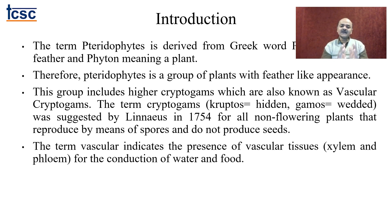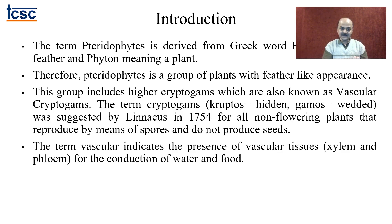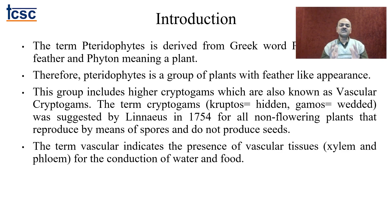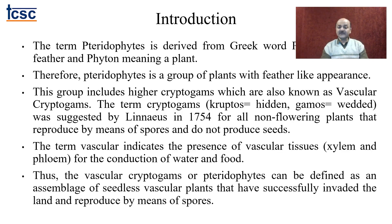The term vascular indicates the presence of vascular tissue — xylem and phloem — for conduction of water and food respectively. Before this, plants were not categorized with the presence of vasculature; there was absence of xylem and phloem. So pteridophytes are the first group of plants in the entire plant kingdom to show the development of vasculature. Thus vascular cryptogams or pteridophytes can be defined as an assemblage of seedless vascular plants that have successfully invaded the land and reproduce by means of spores.